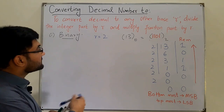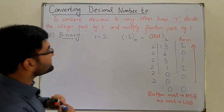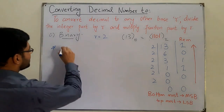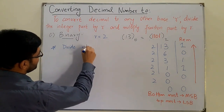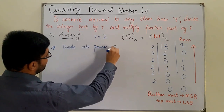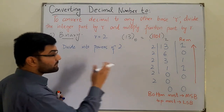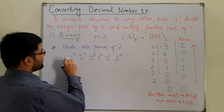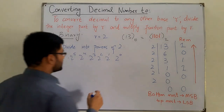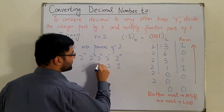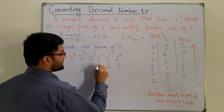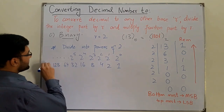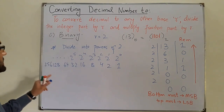We also have a shortcut — a second method. You divide the number into powers of 2 and check. In the binary system, the powers of 2 are: 2⁰=1, 2¹=2, 2²=4, 2³=8, 2⁴=16, 2⁵=32, 2⁶=64, 2⁷=128, 2⁸=256, and so on. You need to remember these values.